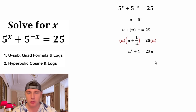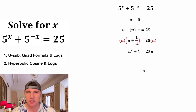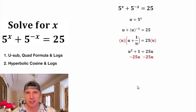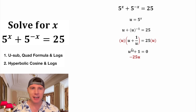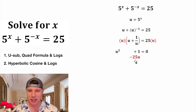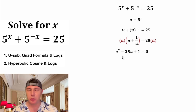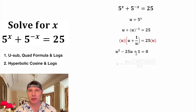Since this has a u squared and a u, this is a quadratic. It's going to be easiest to solve this by setting it equal to 0. Let's subtract 25u from both sides of the equation. On the right-hand side, 25u minus 25u is 0. And then on the left-hand side, we can stick the negative 25u right there.